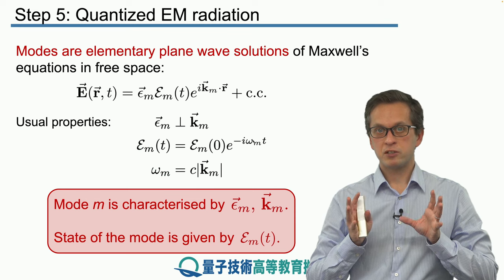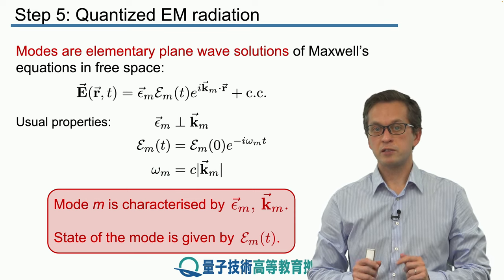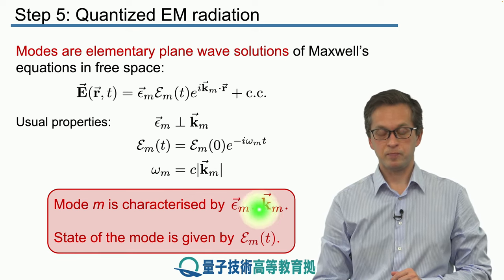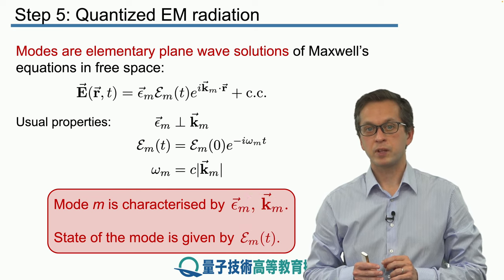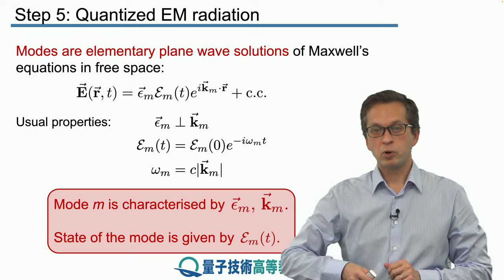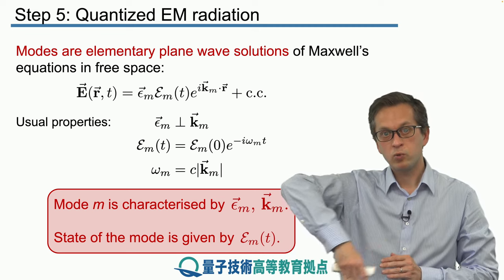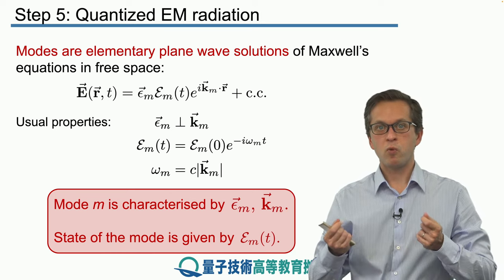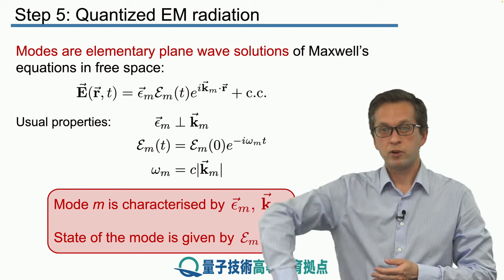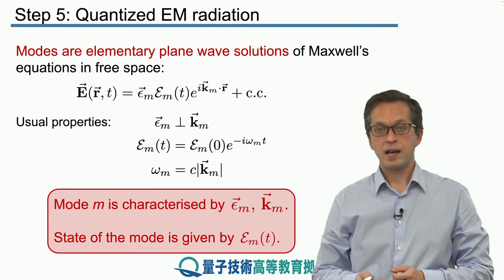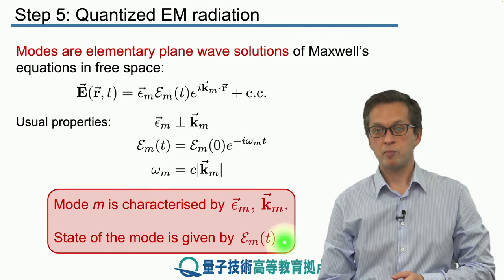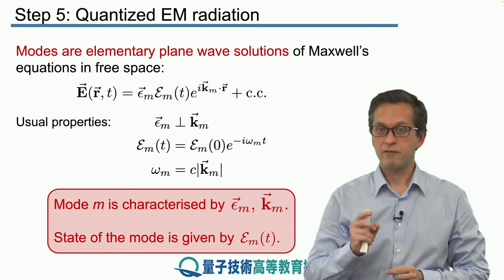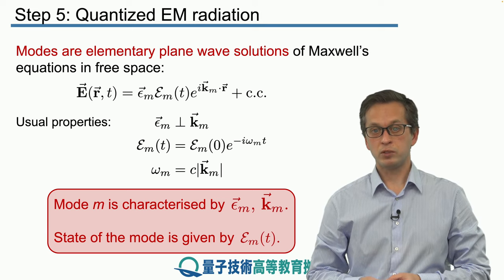But this just gives us the structure of the field. There's another important quantity: its state, expressed by capital epsilon. This has a nice correspondence with a classical pendulum. The polarization and vector k give you only the plane in which your pendulum swings and the frequency of oscillations, but not where the pendulum is at time t. For that you need position x, which is what capital ℰ_m(t) does. To characterize a mode, we need the polarization vector, the k vector, and the state given by epsilon t.